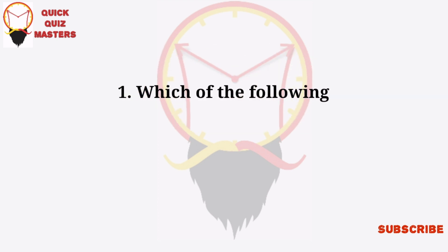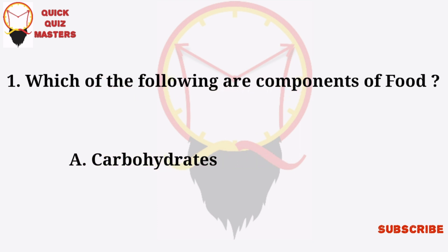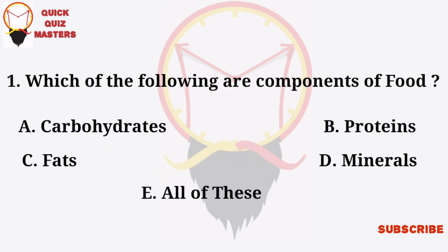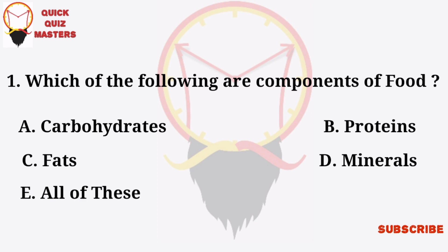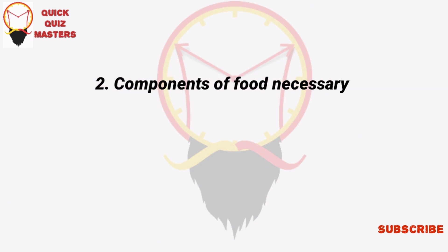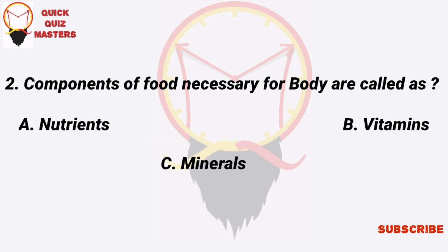Which of the following are components of food? Carbohydrates, protein, fats, minerals, all of these. Components of food necessary for the body are called: nutrients, vitamins, minerals, essential elements.